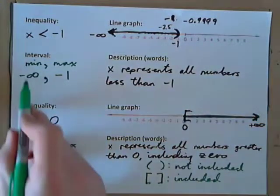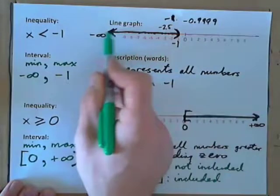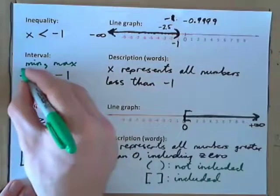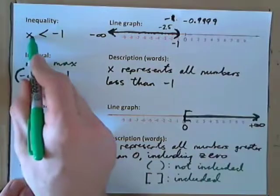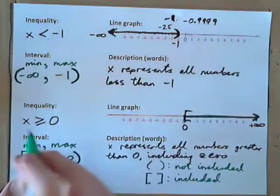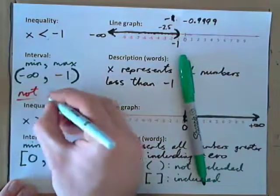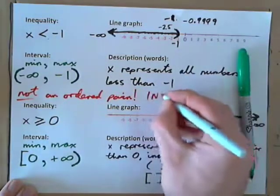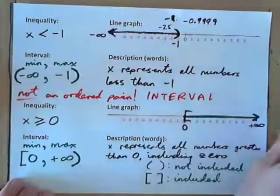Now, we've got to figure out: is the minimum included, or is the maximum included? Well, we cannot ever reach negative infinity, so we can't put a square bracket around infinity — we always put a parenthesis beside positive or negative infinity. Is negative 1 included? It says x is less than negative 1, not less than or equal to. So, that is not included — put parenthesis. And now, this is actually looking just like an ordered pair, but beware — this is not an ordered pair. Intervals look like ordered pairs sometimes, especially when the min and max are both actual numbers and not infinities.